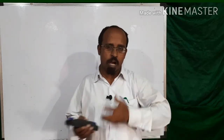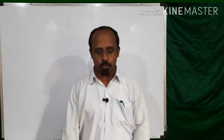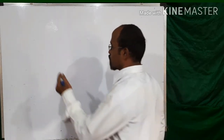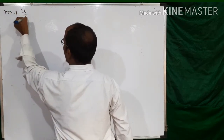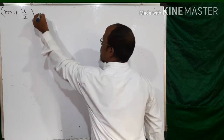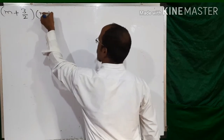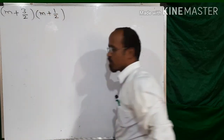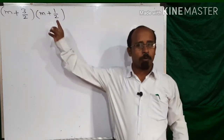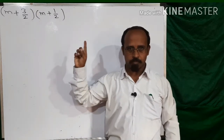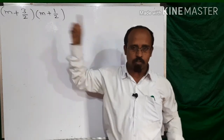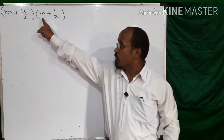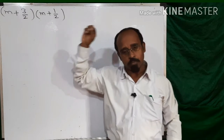First we will see how to use the formula with one example. Suppose the example is (m + 3/2) multiplied by (m + 1/2). Can we use the formula of (x + a)(x + b)? There are two brackets being multiplied, so we can use it. The first term in both brackets is the same, so we can use the formula.